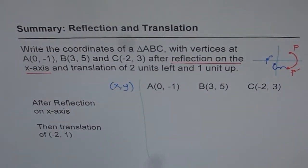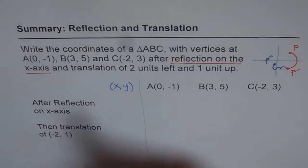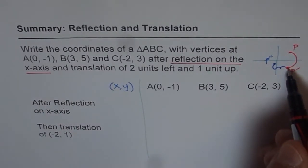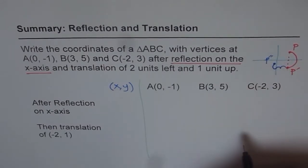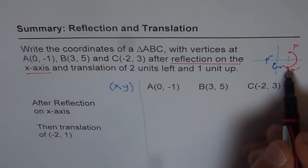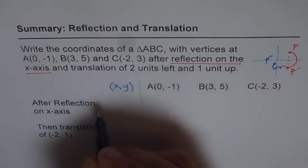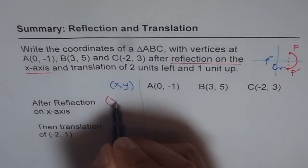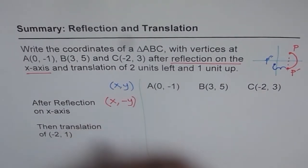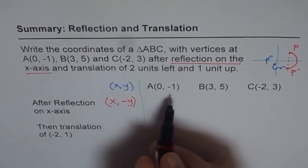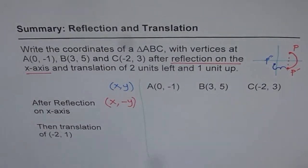Now the rule is, when you reflect on x-axis, what happens? You can see here that the x-value remains same, same x-value. But y-value changes. It becomes negative of whatever it was. So we can write this as x-value remaining same and y-value becoming negative. So we will apply this rule and write down our answer.